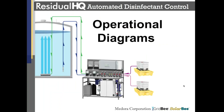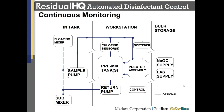Lastly, here are some operational diagrams illustrating what the system is physically doing while progressing through those actions. In continuous sampling mode, the sample pump pushes water from the tank to the workstation. The chlorine sensors draw a small amount of this water off; the rest passes through the injector assembly, constantly flushing and cleaning components, before going back into the premix tank and returning to the tank at the inlet of a floating or submersible mixer via the return pump.